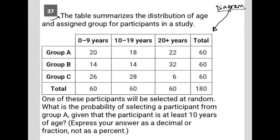The question says, the table summarizes the distribution of age and assigned group for participants in a study. So we see that there's three groups, A, B, and C, and then there's three age groups, 0 to 9, 10 to 19, and 20 plus years.